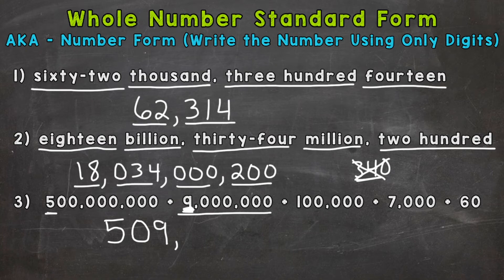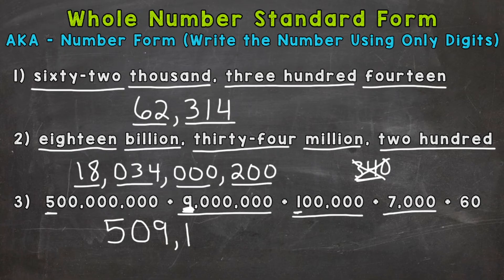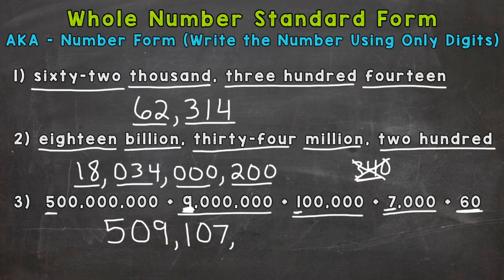Our next place is the hundred thousands place, and we have a one with a value of 100,000 — so let's put that one in the hundred thousands place. The next place is the 10,000s place. We have 7,000, so that seven is not going to be in the 10,000s place — it's going to be in the thousands place. So we put a zero in the 10,000s, and then the seven in the thousands to represent 7,000. Next, we have the hundreds place. We have a 60 coming up, so we need a six in the tens place — that doesn't help with hundreds. We don't have anything with a value in the hundreds, so we place a zero there. Next is the tens place, and that six has a value of 60, so six in the tens.